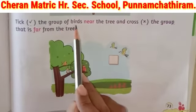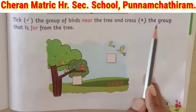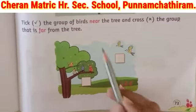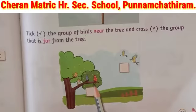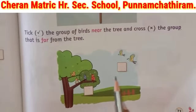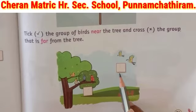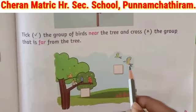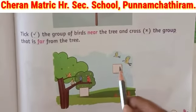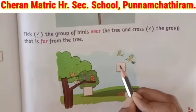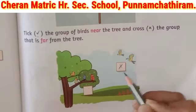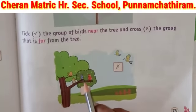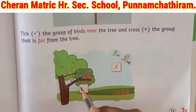Tick the group of birds near the tree and cross the group of birds far from the tree. Where are those birds? Yes, those birds are far from the tree, so we have to cross in this box. Where are these birds? Yes, these birds are near the tree, so we have to tick in this box.